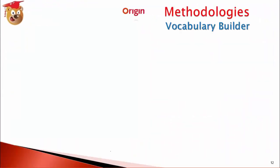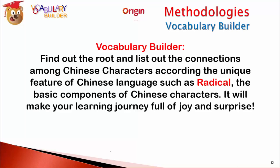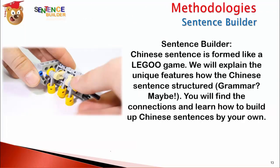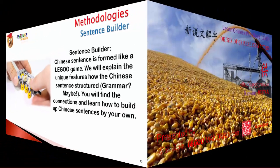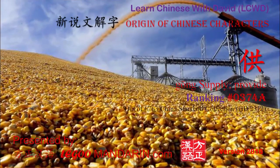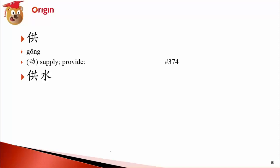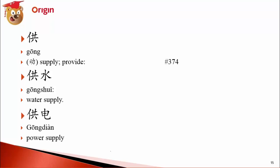Let's look at sentences and vocabulary with 供. 供水 (gōng shuǐ) — water supply. 供电 (gōng diàn) — electricity supply, power supply. 电 means electricity.